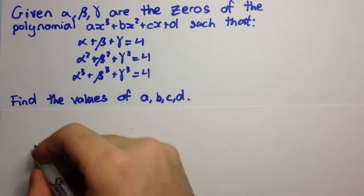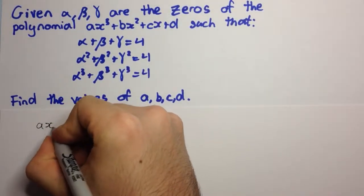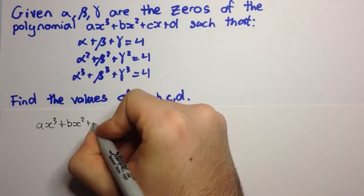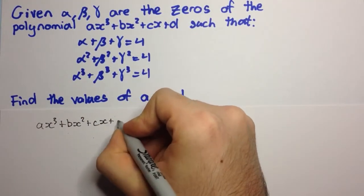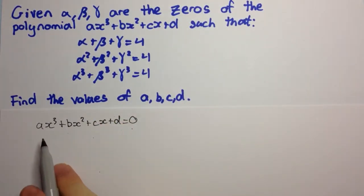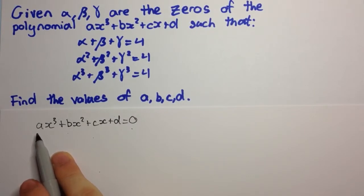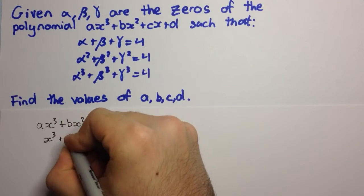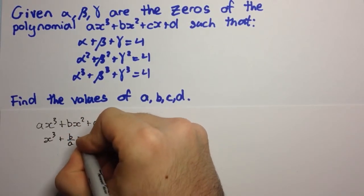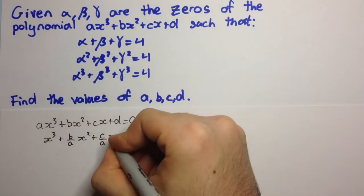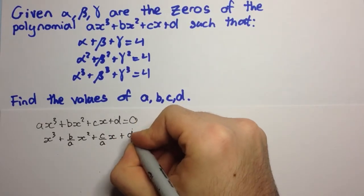So the first thing we can do is write the polynomial and set it to 0 so that we have an equation. And now we can divide through by the coefficient of x cubed — so we divide through by a — and you'll see why we do that in a minute. So we have x cubed plus b over a, x squared, plus c over a, x, plus d over a is equal to 0.